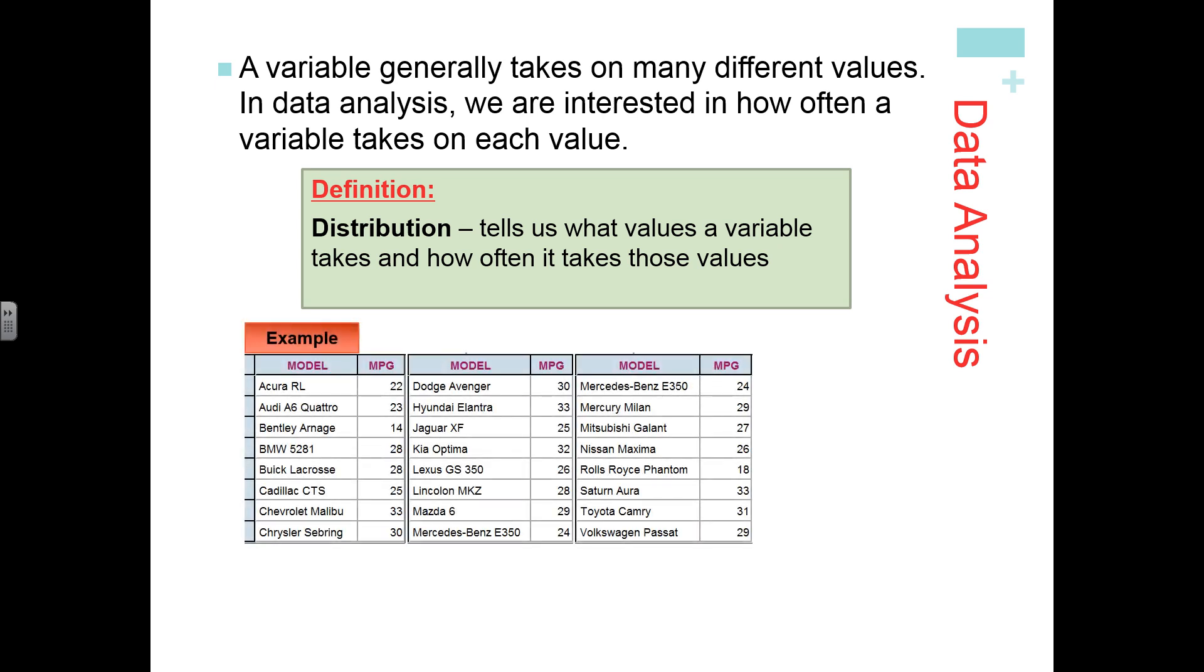For example, here we're looking at a set of data where we're looking at the model of a car and the mileage per gallon. The model of the car is the individuals of the data set. The miles per gallon is the variable of interest. Looking at it in this form, the way it's presented right here, it's kind of hard to see what the data is really telling us.